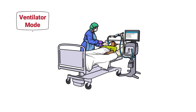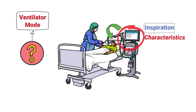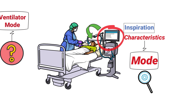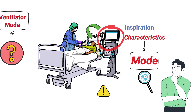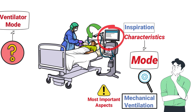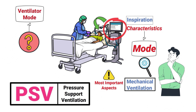A ventilator mode is a way of describing how the mechanical ventilator assists a patient with inspiration. The characteristics of a particular mode control how the ventilator functions. Understanding each of the different modes is one of the most important aspects of mechanical ventilation. One mode that we need to discuss is pressure support ventilation.